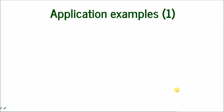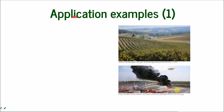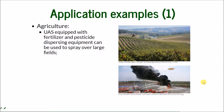I want you to use your imagination. I compiled some examples of general applications and then the applications specifically for remote sensing, for collecting data remotely. In agriculture, the example is what I said before — the UAS can be equipped with fertilizer and pesticide dispersing equipment, and it can be used to spray over large fields or target specific areas where disease is present.